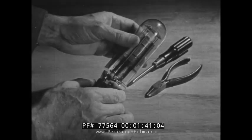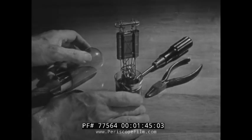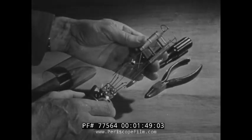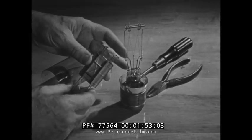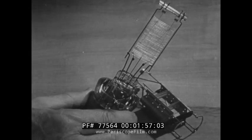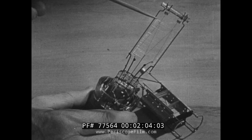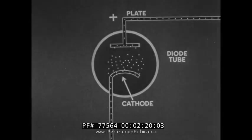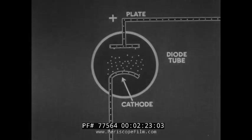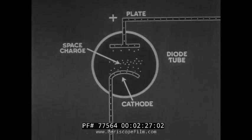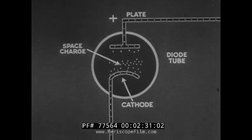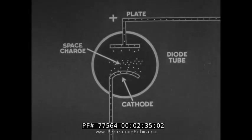Remove the glass bulb from a triode tube and the plate becomes visible. Inside the plate, the grid and filament are located, supported by wires embedded in the glass base. This type of tube is equipped with a directly heated cathode. The control grid is seen wound around outside the cathode.